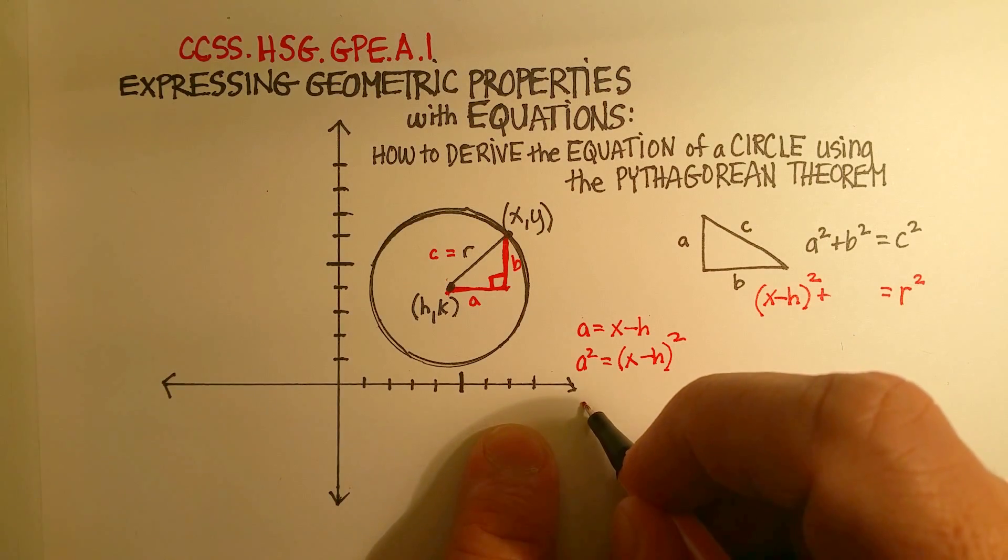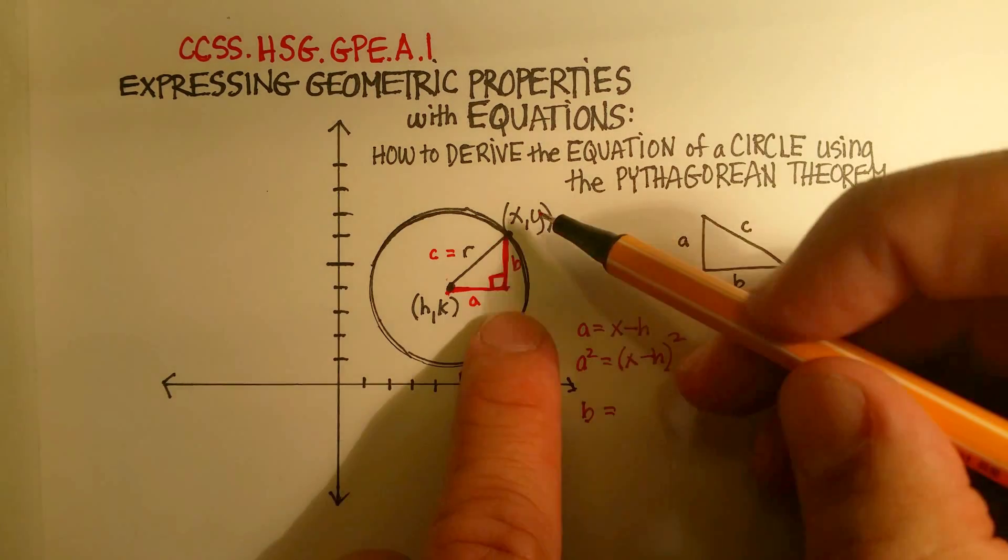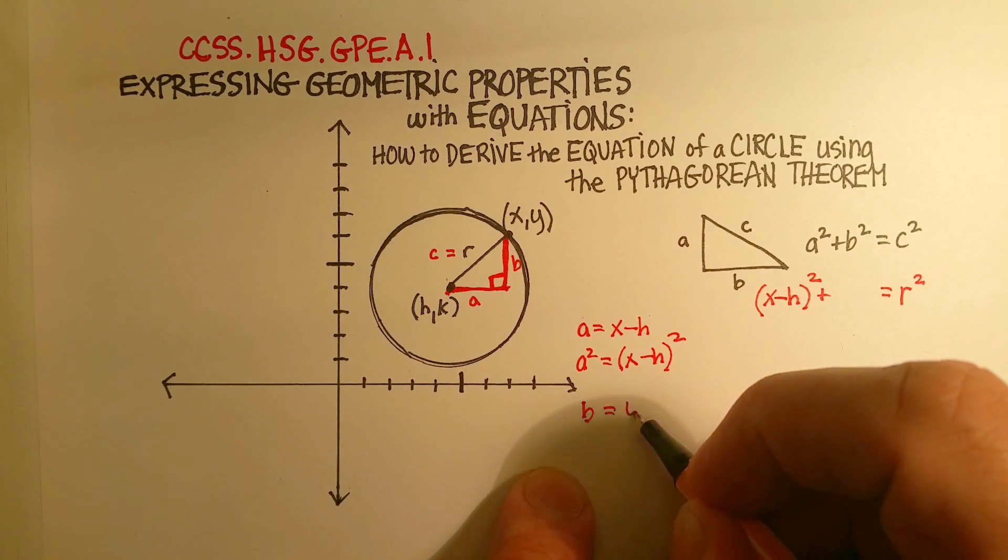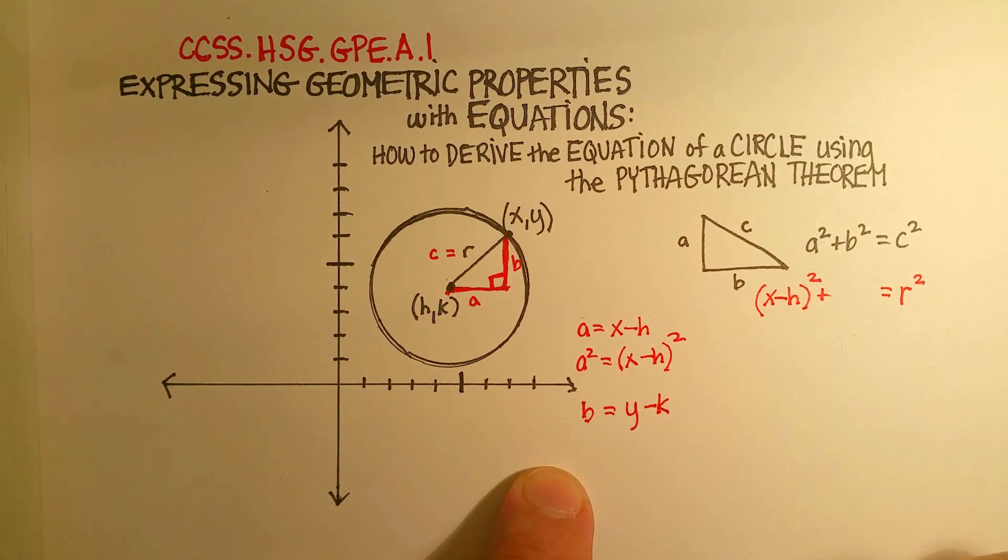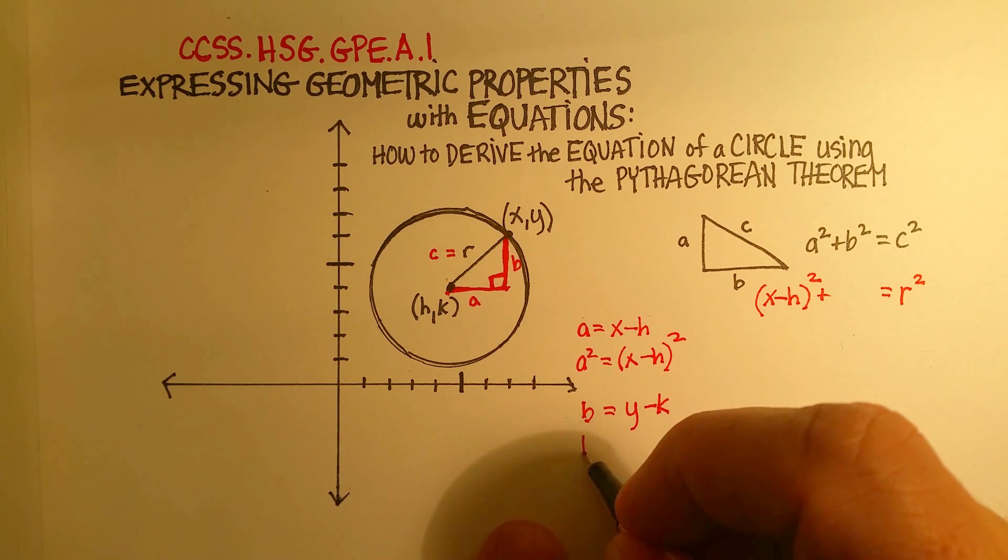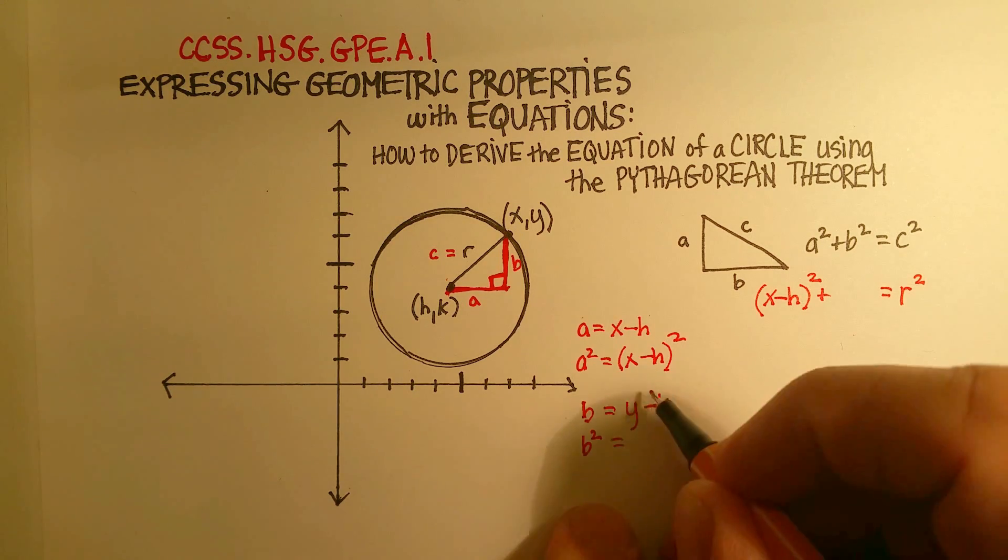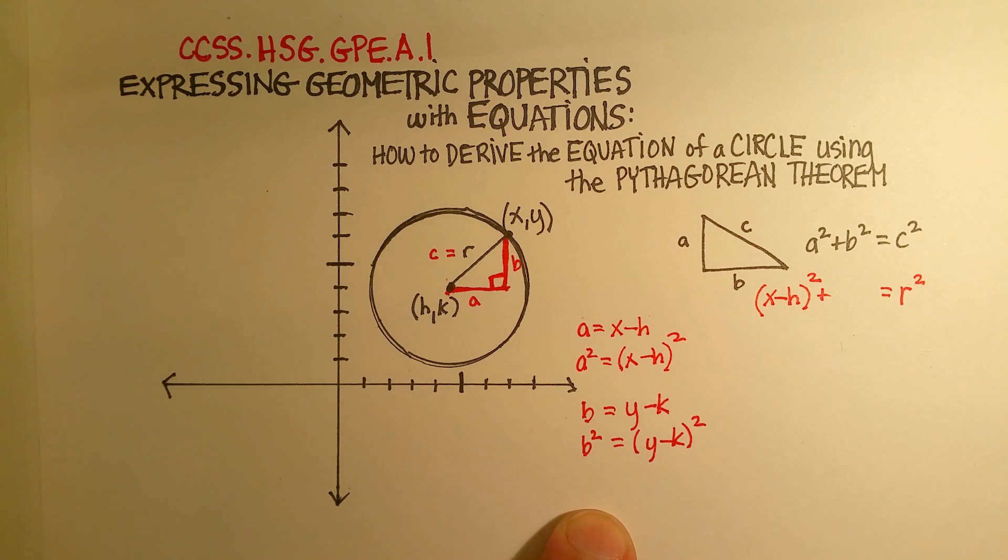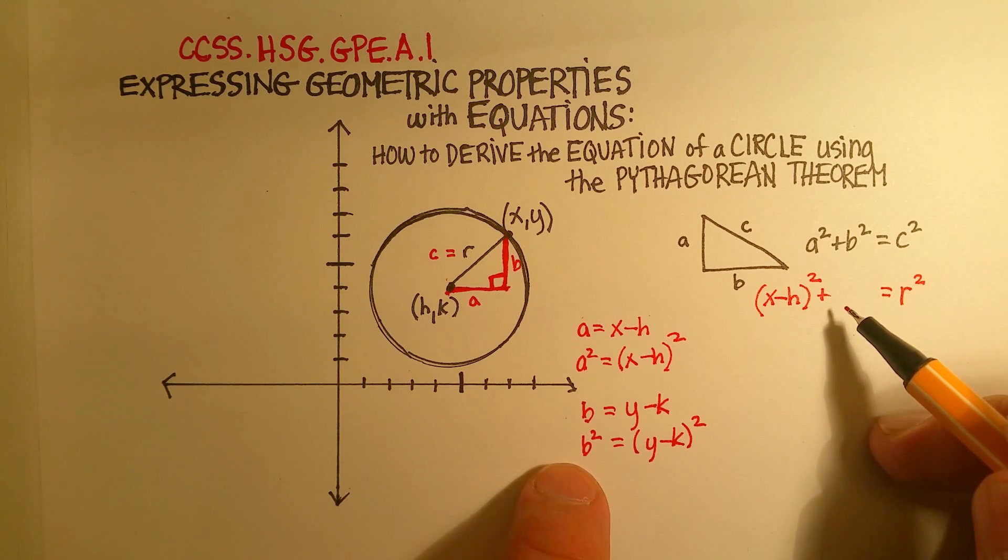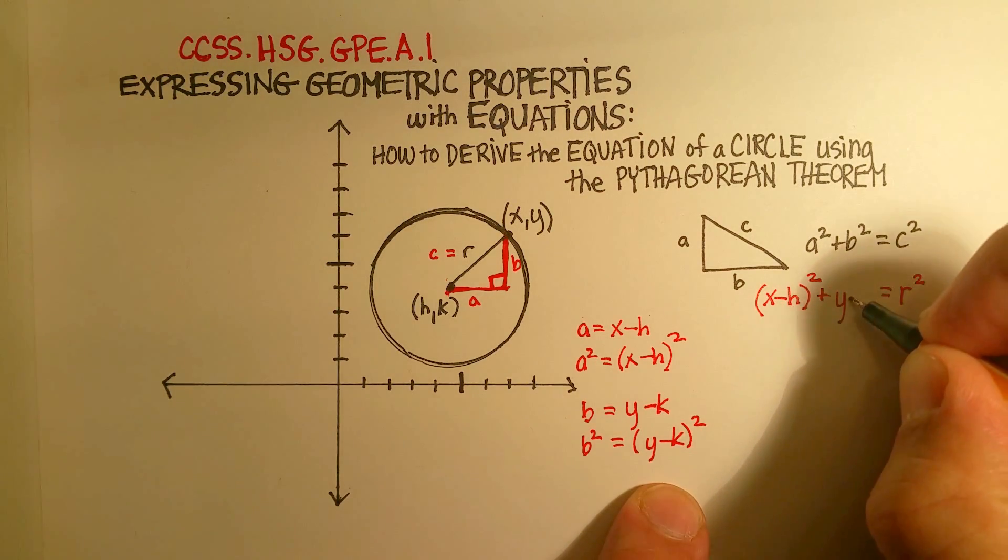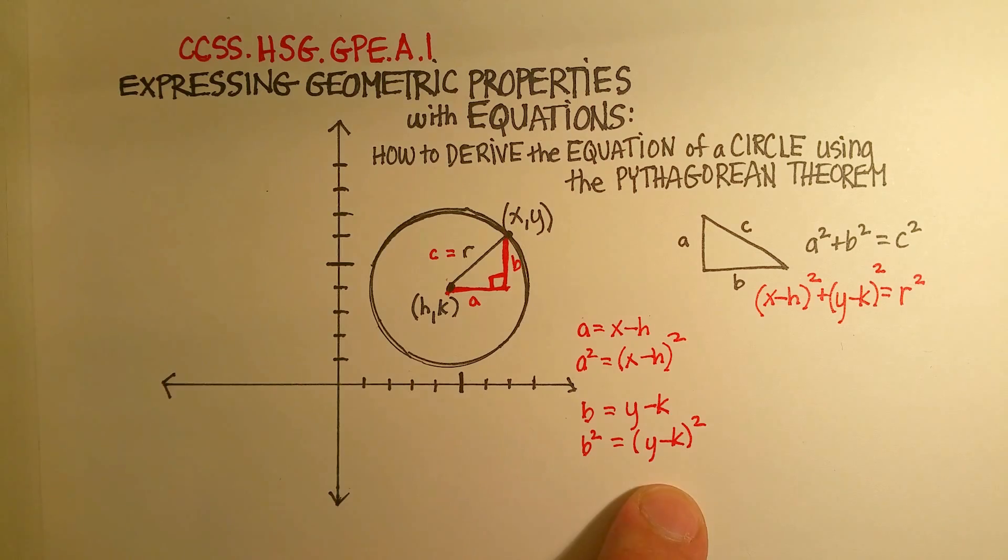So b equals the distance between this y and this k, which is y minus k. We're going to square this b, which means we square y minus k. Now we replace b² in the Pythagorean Theorem with (y - k)².